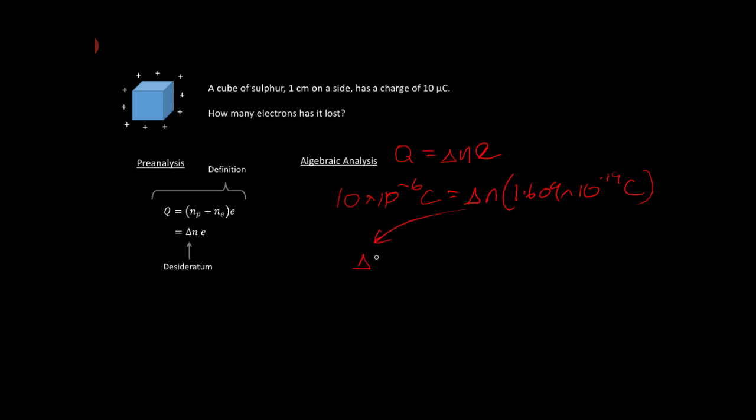So that delta n is going to be equal to the 10 times 10 to the minus 6, which is 10 to the minus 5 coulombs, over that 1.609 times 10 to the minus 19 coulombs. So those coulombs cancel out.